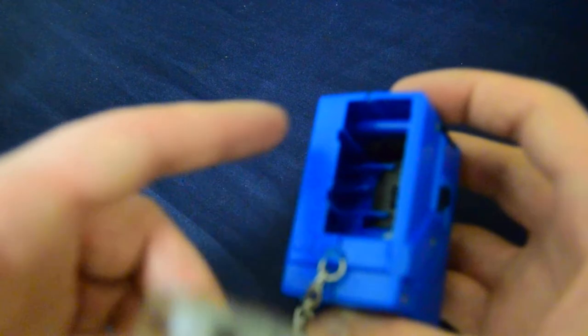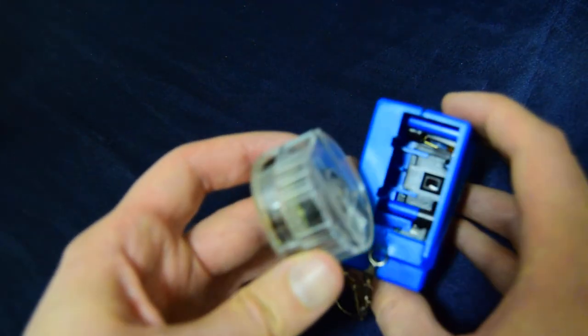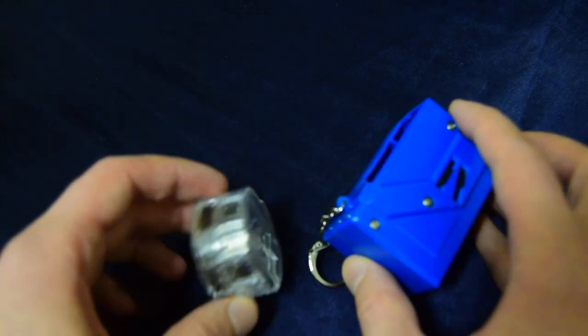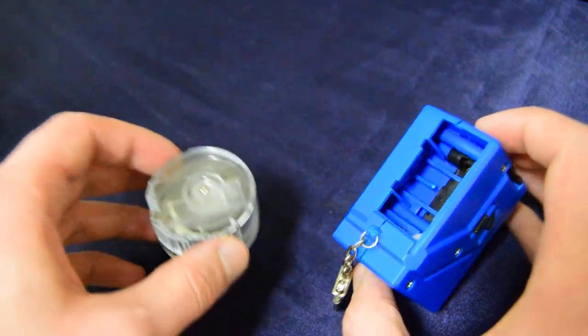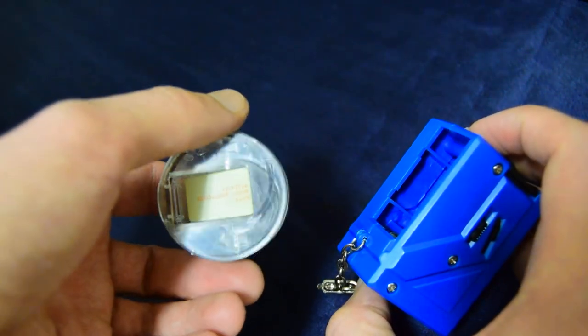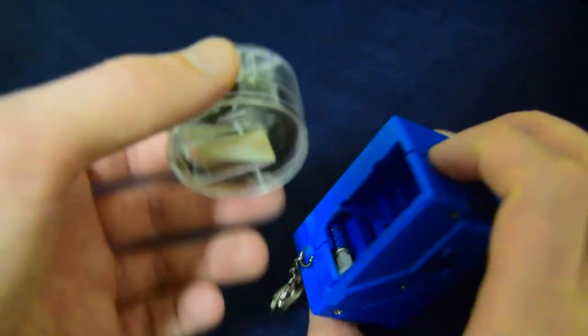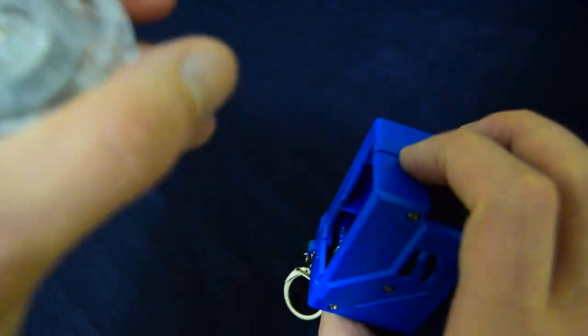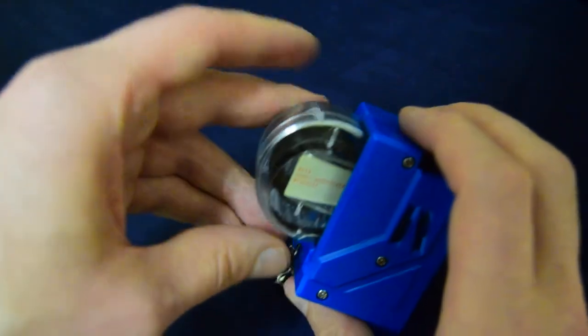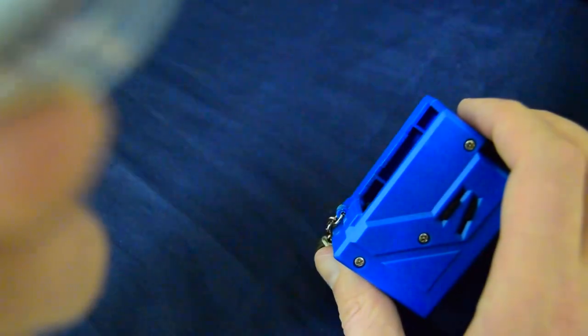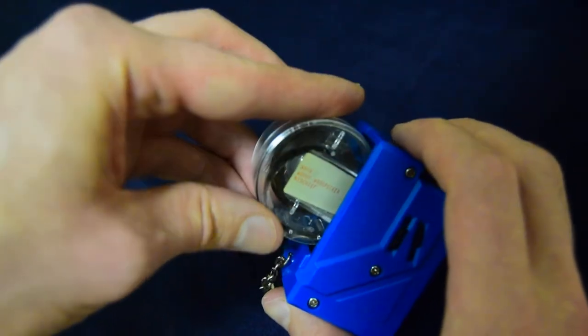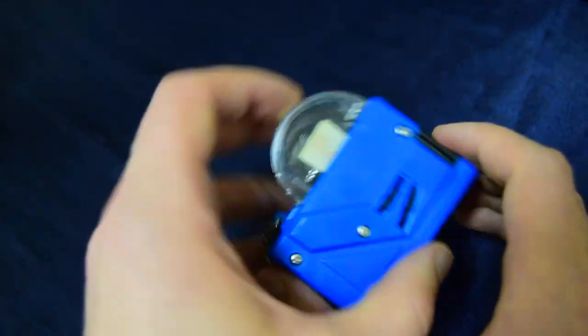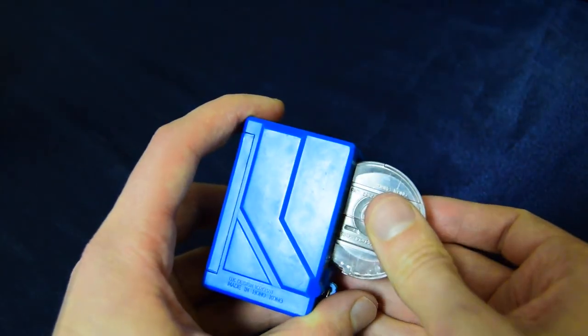You see these discs here, there's some discs, and this also. So you just push it in where it says, there's arrows there, and the side there, there's arrows over there. So you just push it in and it just clicks in there. It's nothing else, you can just take it out.